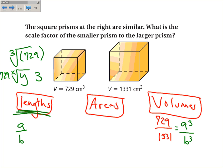So, if you use that, the cube root of 729 is 9, and the cube root of 1331 is 11. So, this is the scale factor of my two rectangular prisms.